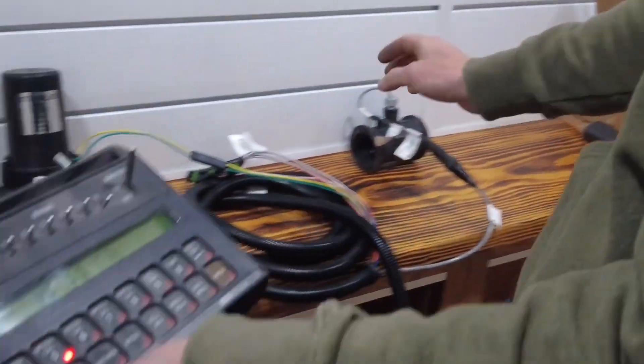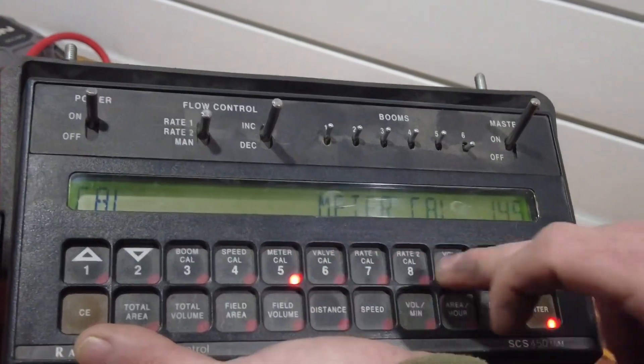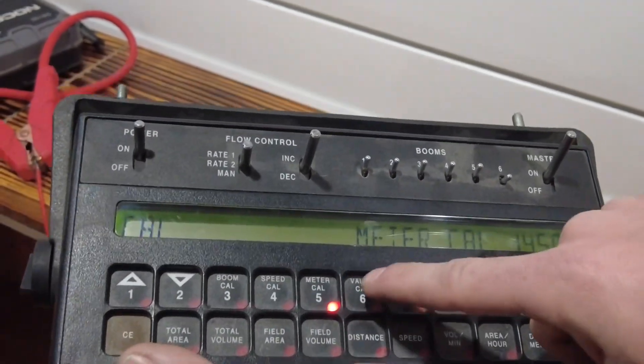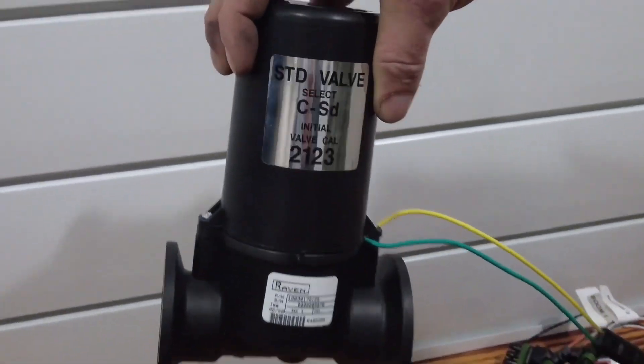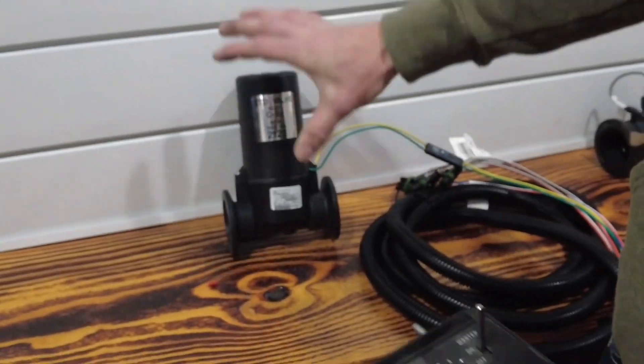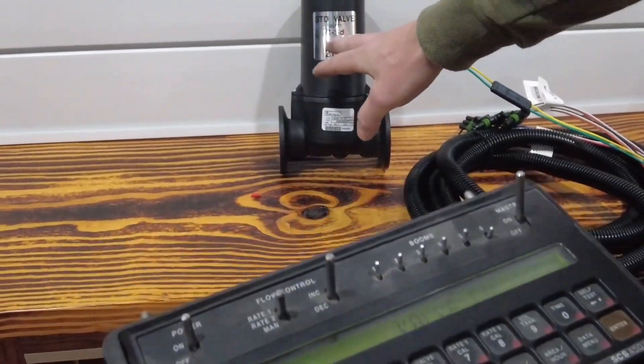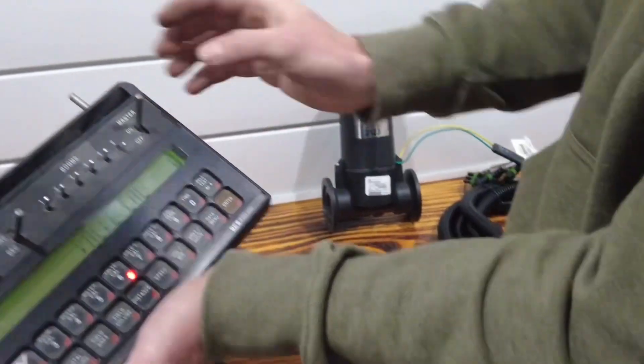1,450 is what we're punching in there. 1,450 enter. Valve cal. If only they would put a sticker on there. Sometimes it does come off though, but they make it very handy when we're doing all of these calibrations. We've got a sticker there, we've got a sticker here. Makes it super simple for setting these up.